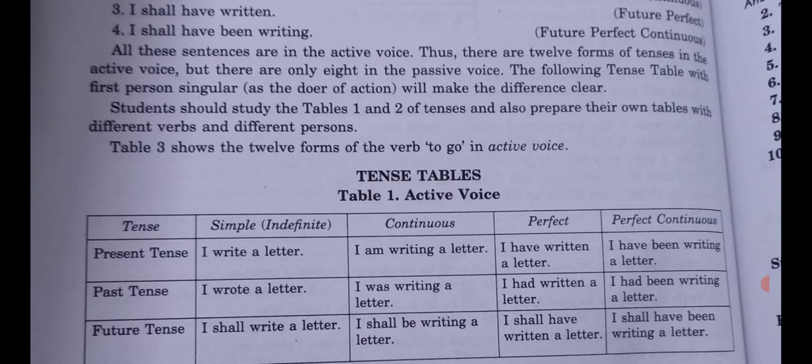In past continuous we use was or were — 'was' with singular, 'were' with plural — plus V1 plus -ing. Remember: in the continuous form we always use V1 plus -ing; if present, then is/am/are; if past, then was/were; if future, then will/shall. For past perfect the rule is: had plus the third form of the verb, regardless of singular or plural. Example: I had written a letter. For past perfect continuous: had plus been plus V1 plus -ing.